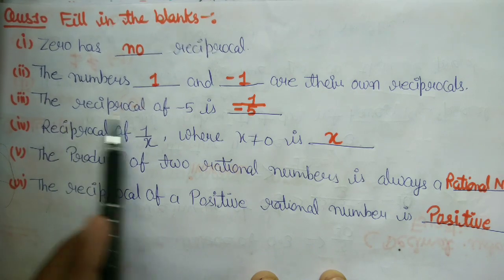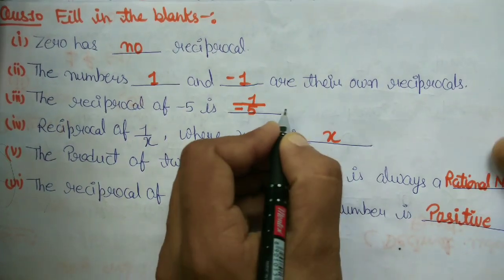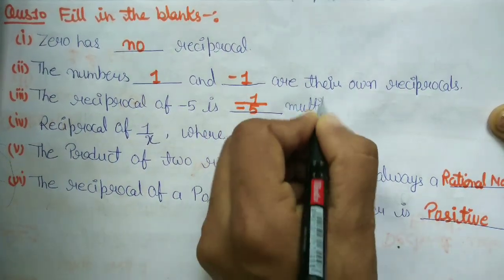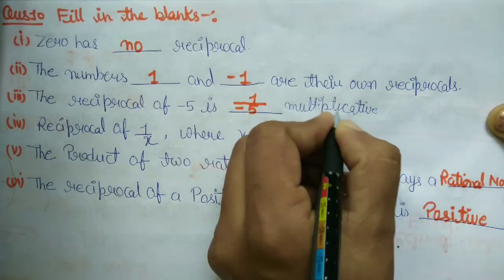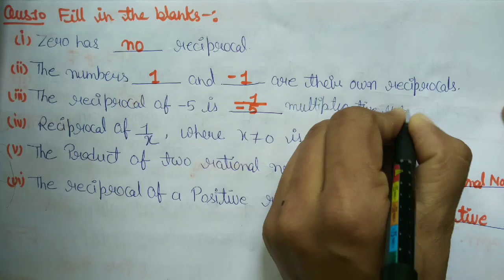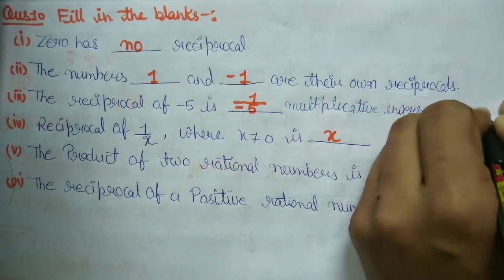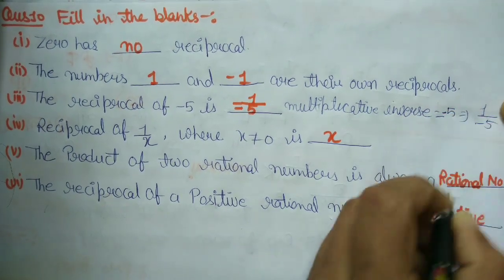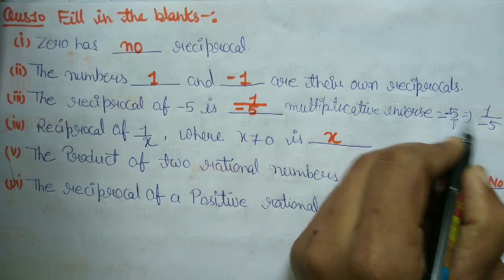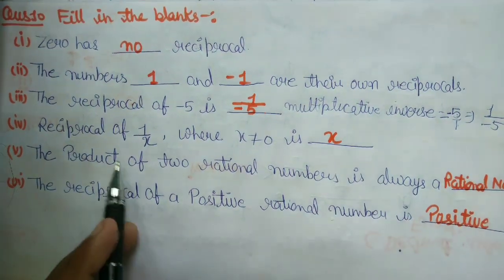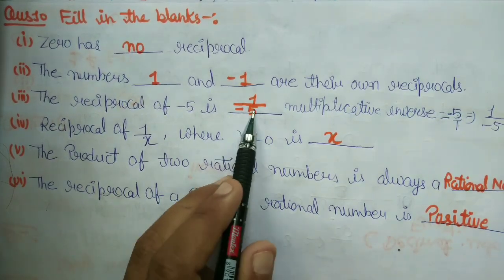Question number third: the reciprocal of minus 5 is — ab hum minus 5 ka reciprocal karenge. Reciprocal ko hum multiplicative inverse bhi bolte hain. Minus 5 ko fraction form mein likho to minus 5 upon 1 hai — toh iska multiplicative inverse, reciprocal, kya ho gaya? 1 upon minus 5.